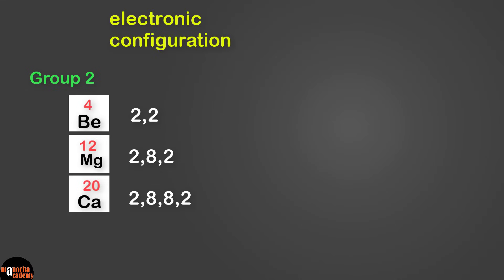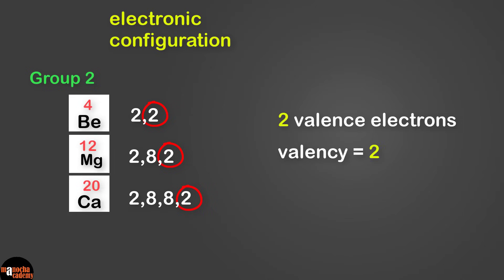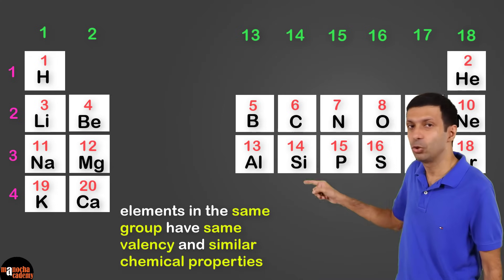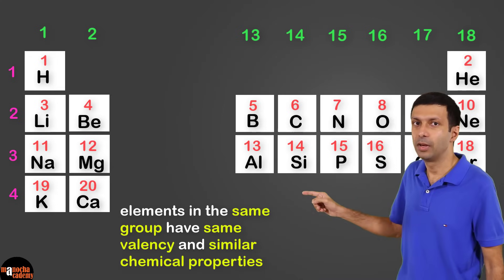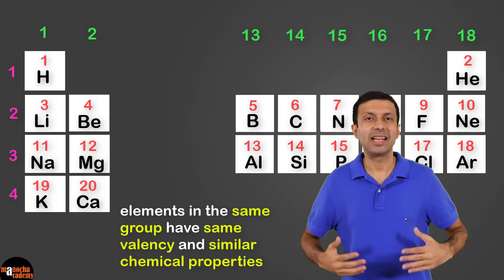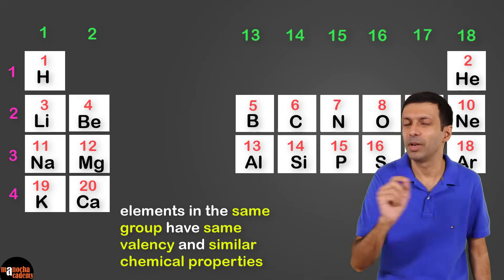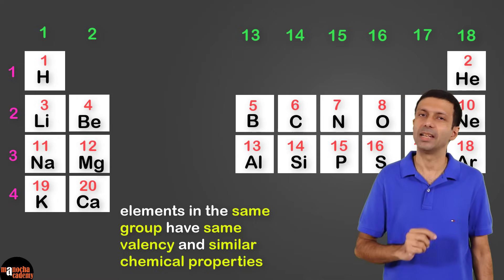So once again, you can see all these elements have the same number of valence electrons, which is 2 in this case. So they have the same valency 2, and hence they show similar chemical properties. In summary, elements belonging to the same group have the same valency and similar chemical properties because they have the same number of valence electrons.